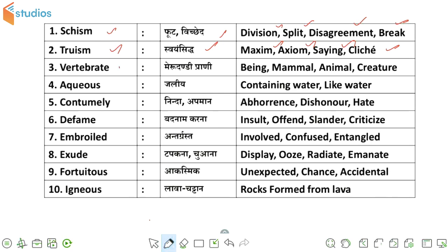Next word we have, this is vertebrate. So vertebrate का क्या meaning होता है — मेरु दंडी प्राणी, जिसके synonyms हैं: being, mammal, animal, and creature.